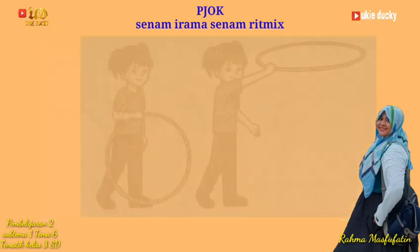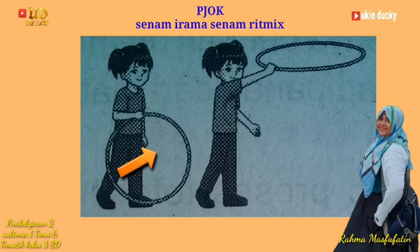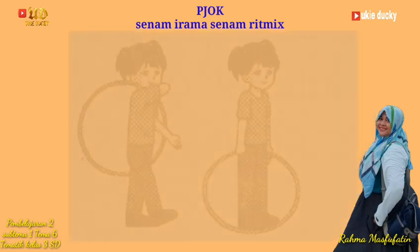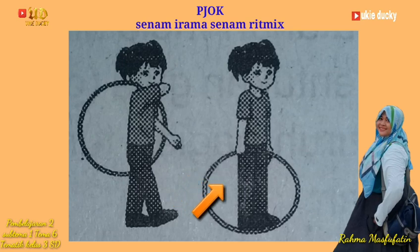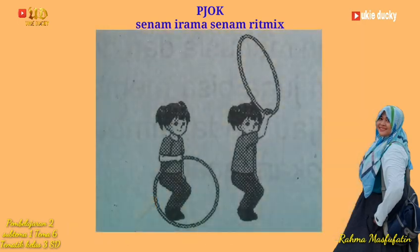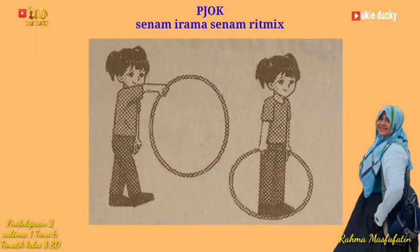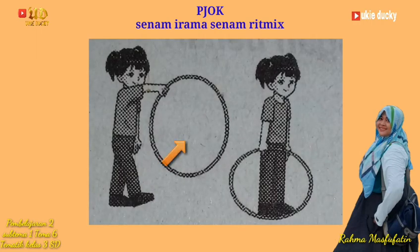Yang pertama adalah kaki kiri berjalan melangkah ke depan, dan tangan kanan mengayunkan simpai ke depan. Setelah itu, lakukan gerakan kaki kanan berjalan melangkah ke depan, simpai diayunkan ke belakang. Seiring langkah kaki kanan, kedua kaki lalu merapat berdiri. Selanjutnya, tekuk kedua lutut lalu ayunkan simpai ke atas. Dan yang terakhir adalah ayunkan simpai ke depan sambil lutut diluruskan lagi. Posisi badan kembali tegap. Semua gerakan tersebut dilakukan tanpa putus-putus, karena merupakan sebuah rangkaian gerak.